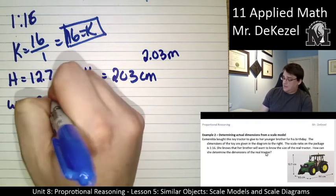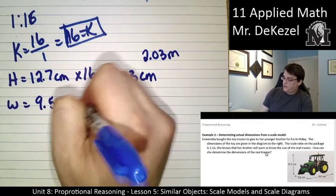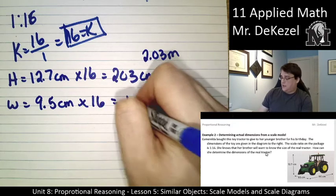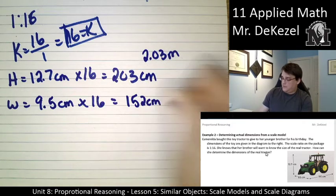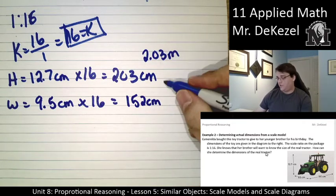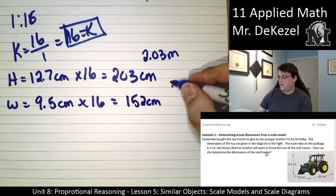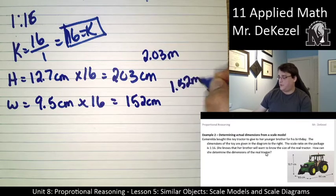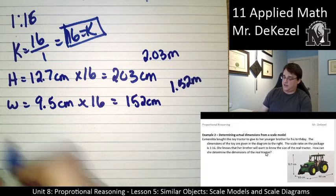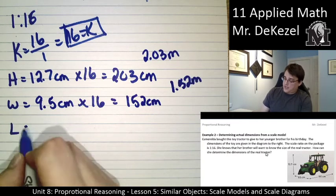For the width of the tractor, it is measured as 9.5 centimeters, and we're going to multiply that by 16 to get 152 centimeters. Again, 152 centimeters for her brother, maybe he'd want to know 1.52 meters. Maybe he can put that into scale in his head better.